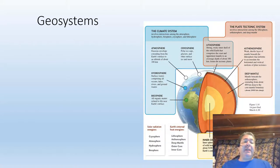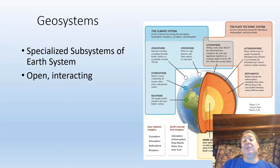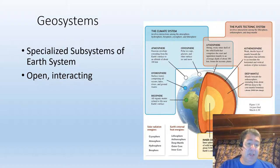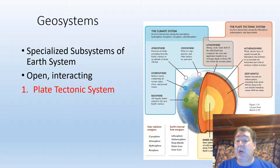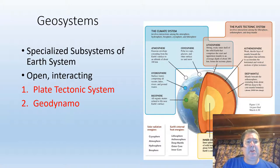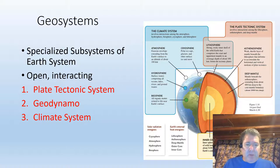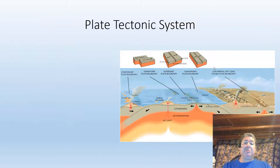Breaking down the geosphere a little bit, we have the geosystems — specialized subsystems of Earth system science. Just like everything else, they can be considered open and interacting. These include, one, the plate tectonic system; two, the geodynamo, which is a fancy word for Earth's magnetic field; and three, the climate system. We'll be investigating these all individually, but let's introduce them now.